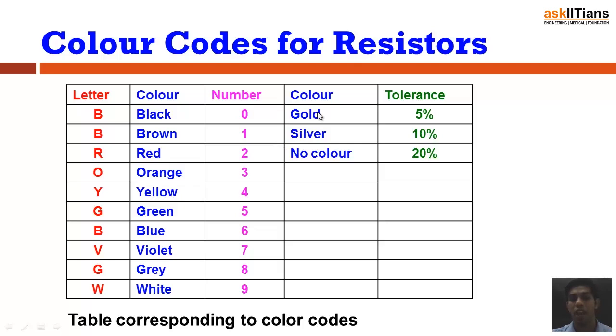The third one also can be used from the same table to find out the decimal point. Now the fourth ring, which actually gives you the tolerance value, has only three possibilities: gold, silver, and no color. So gold tells me a 5% tolerance, silver tells me about a 10% tolerance, and no color means there is a 20% tolerance.